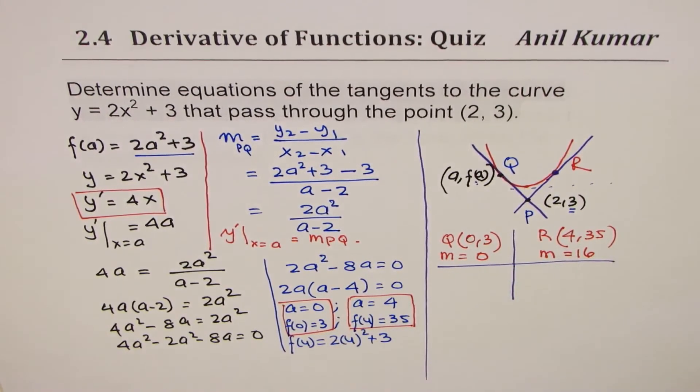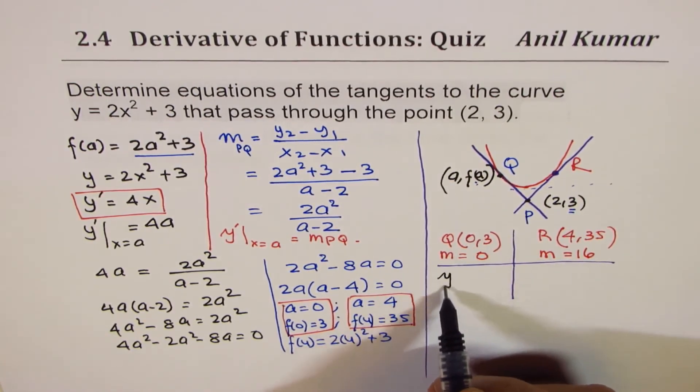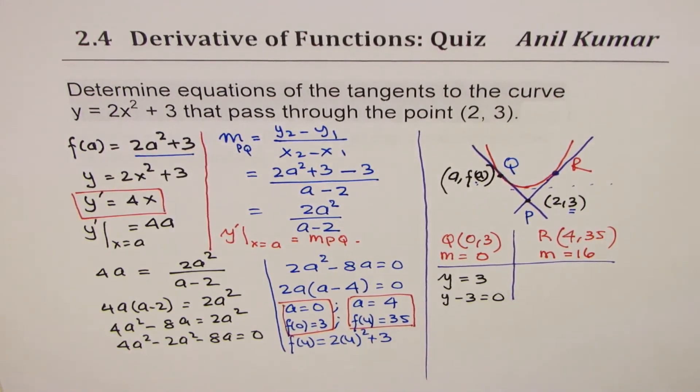So these are the tangent lines. Now (0, 3) is the y-intercept and slope is 0. So the equation for this line is y equals 3, or you can write y minus 3 equals 0.